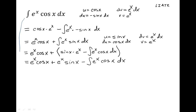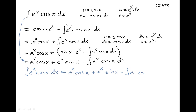If we follow our equalities all the way through, our original integral is equal to this whole statement. That gives us an equation: the integral of e to the x cosine x dx equals e to the x cosine x plus e to the x sine x minus the integral of e to the x cosine x dx. On both sides of the equation we have the integral of e to the x cosine x dx — on the right side it's being subtracted, so we add it back to the left side.